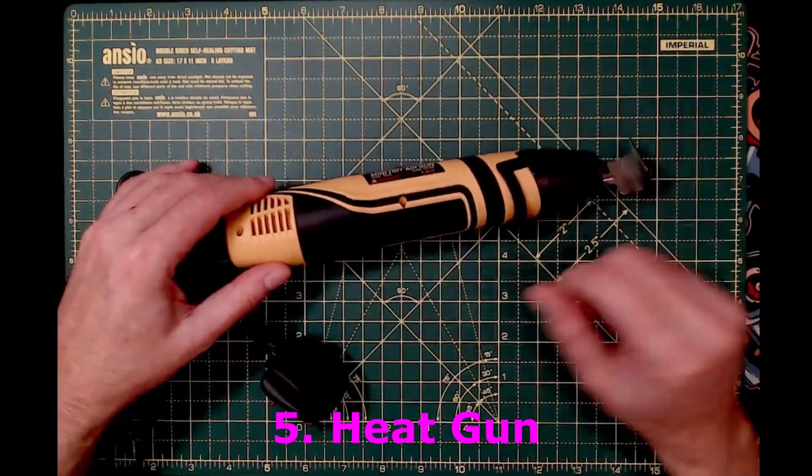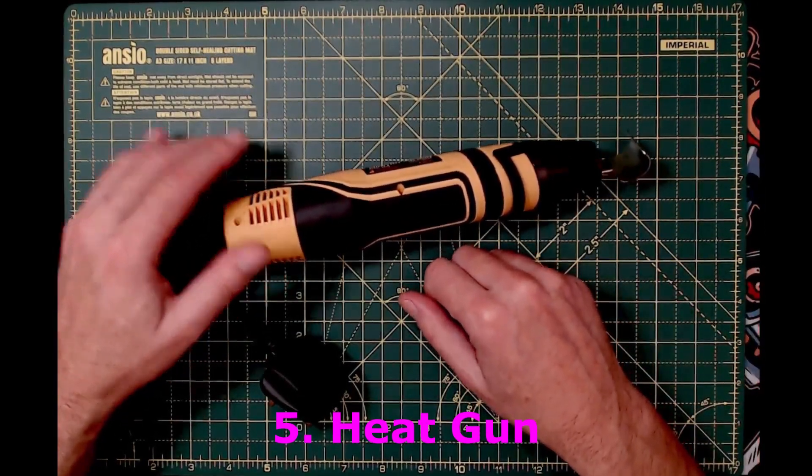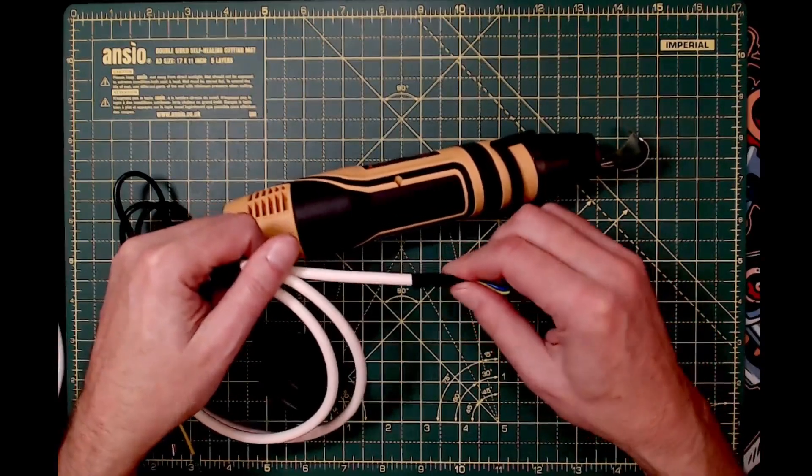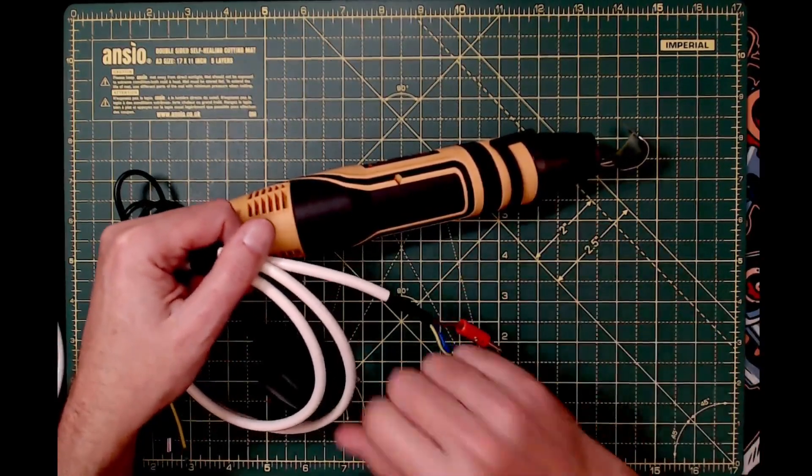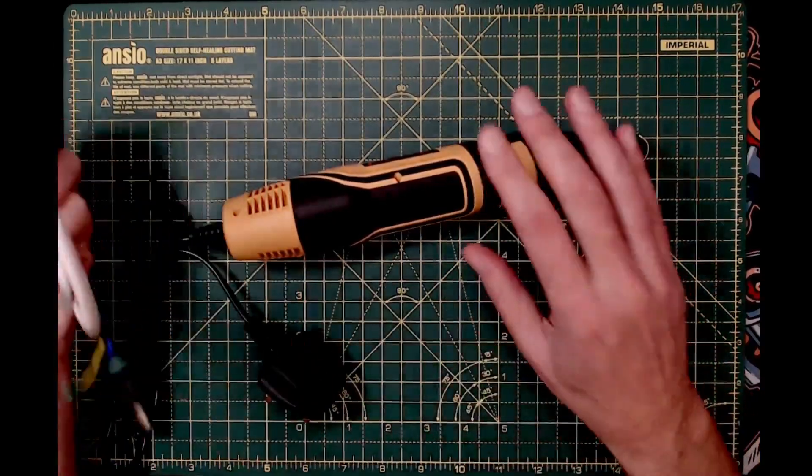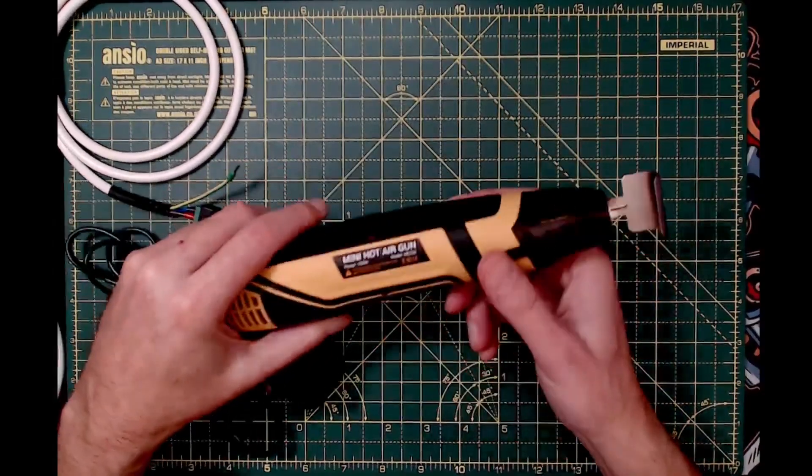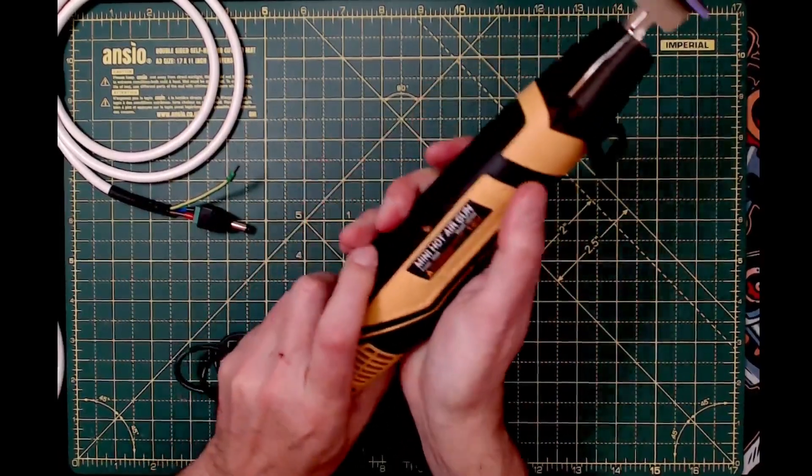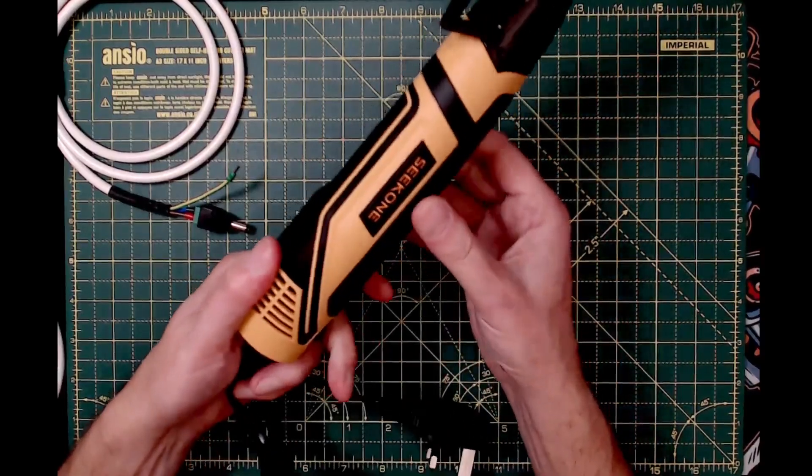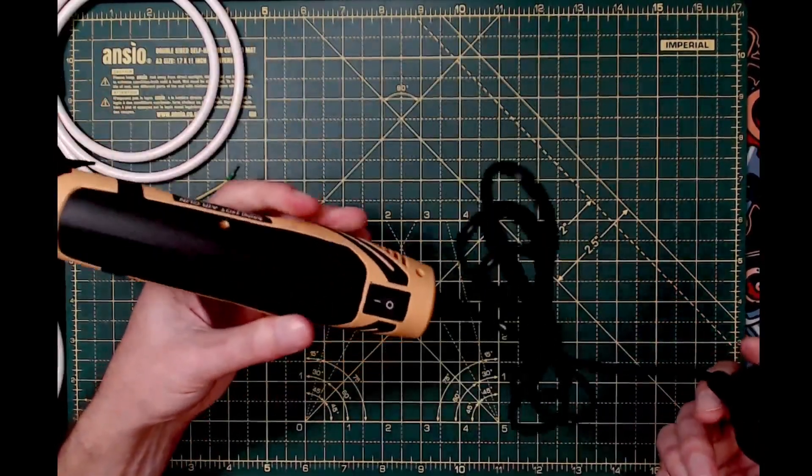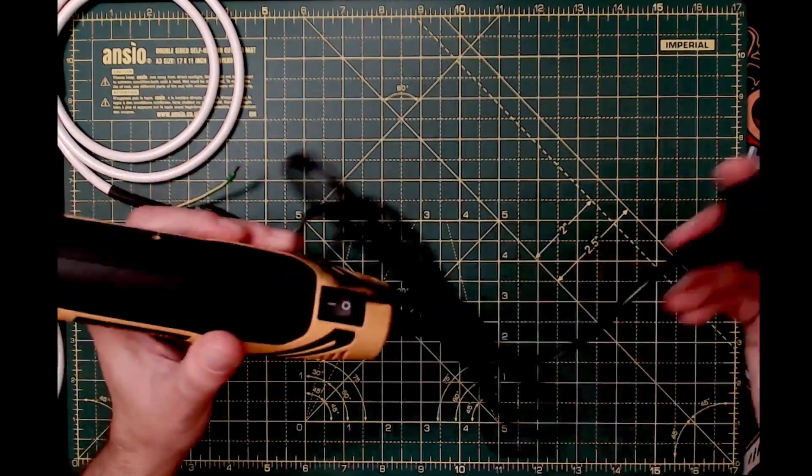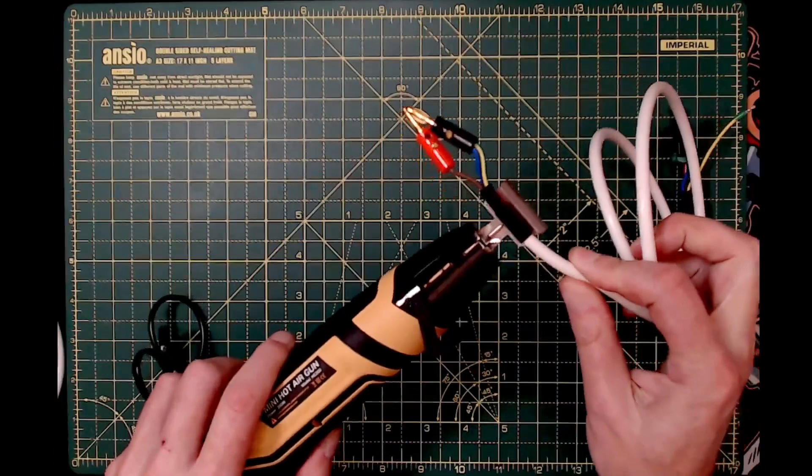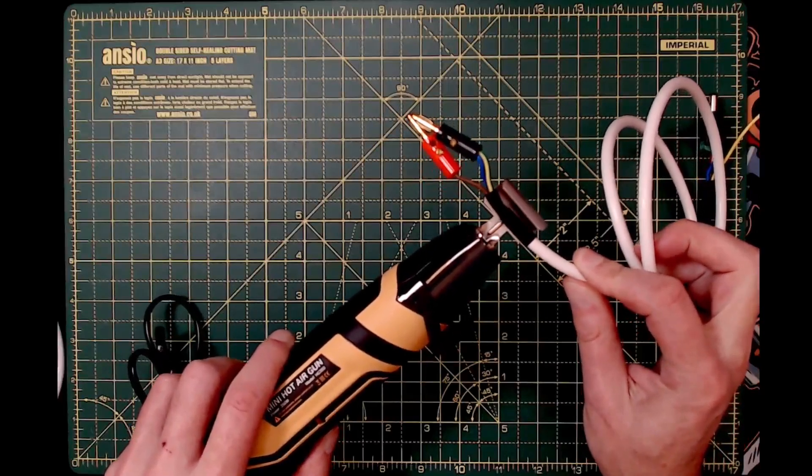On heat shrink: don't use a lighter or match—you'll mark the cable and it doesn't do a good job. Definitely don't use your soldering iron—you'll ruin the tip. Invest in a proper heat shrink gun. This was dirt cheap, and I was surprised at the quality. It's got a nice solid, rubberized feel. It's mains-powered—I didn't go for battery because you pay a premium. It's got a heat shield that circulates hot air around your heat shrink and does a fantastic job.